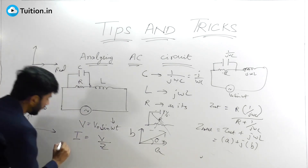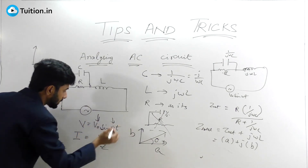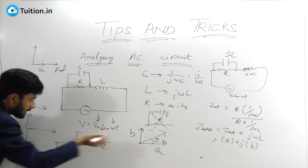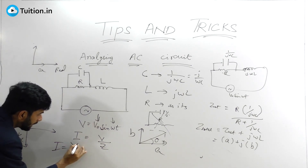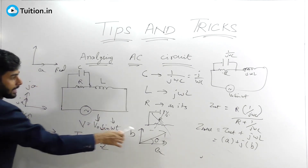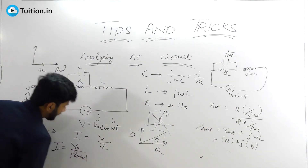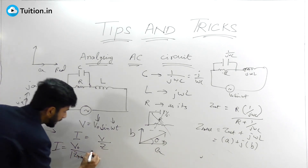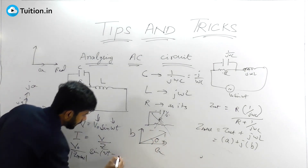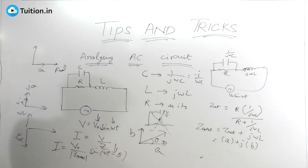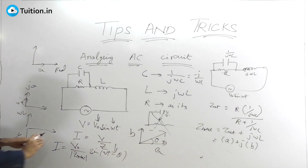Now, if you need the current in the circuit: just like voltage is peak voltage times sine of something, current will be peak current times sine of something. Peak current is nothing but peak voltage divided by the magnitude of Z_total — that's your peak current — and you multiply this with sine of (ωt minus the angle of impedance). Remember: minus angle of impedance. Don't do plus; you have to do minus the angle of impedance. That's how you get the current phasor.